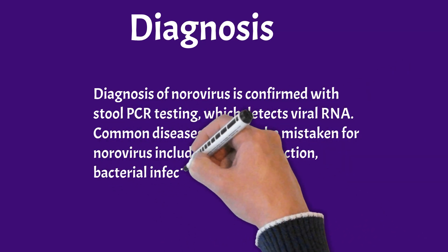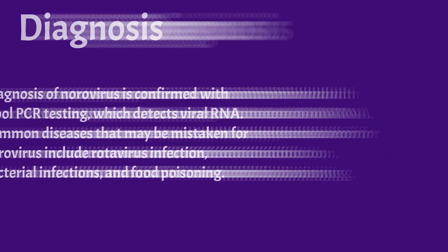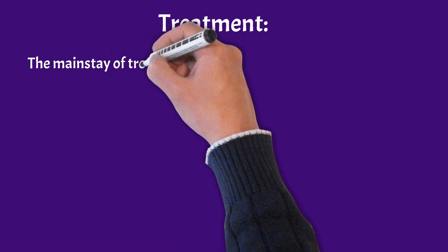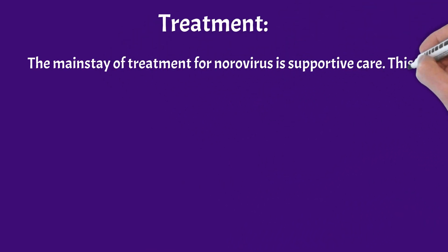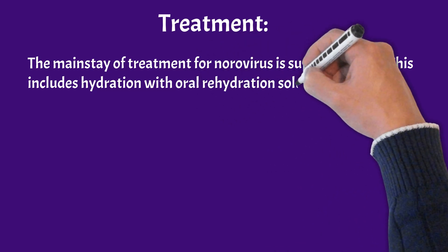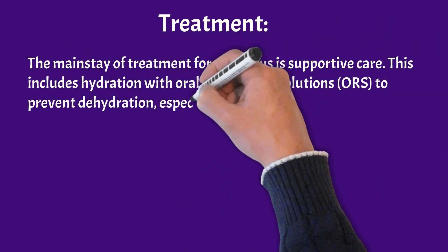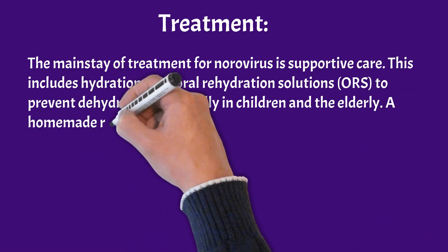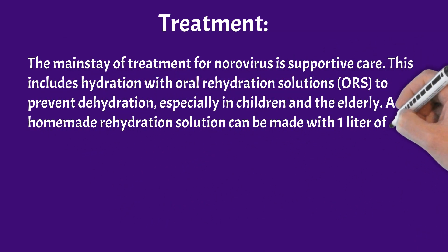The mainstay of treatment for norovirus is supportive care. This includes hydration with oral rehydration solutions (ORS) to prevent dehydration, especially in children and the elderly. A homemade rehydration solution can be made with one liter of clean water, six teaspoons of sugar, and 0.5 tablespoons of salt.